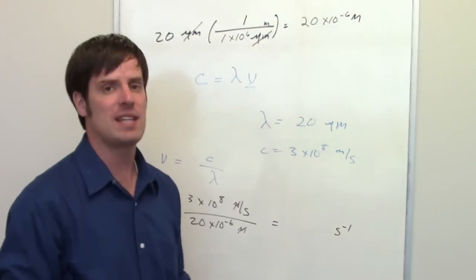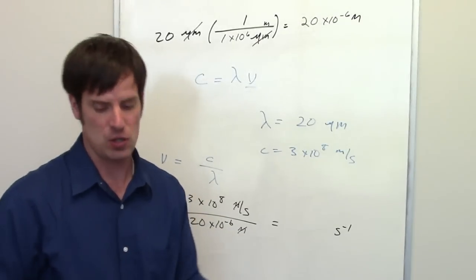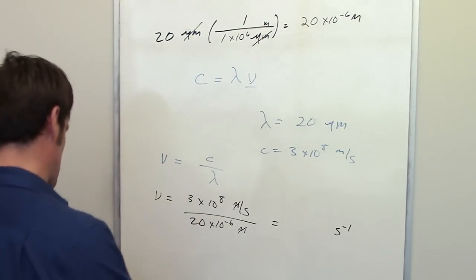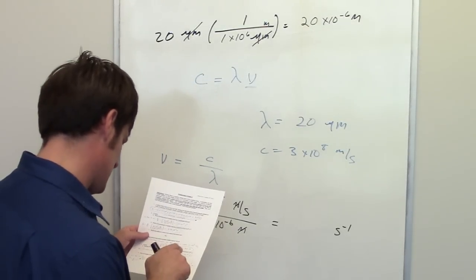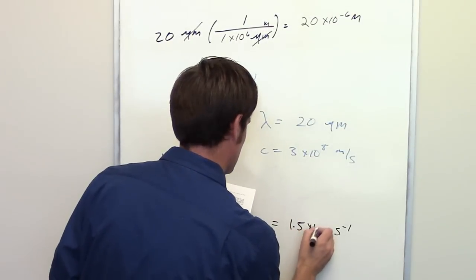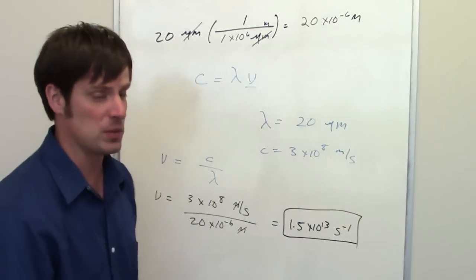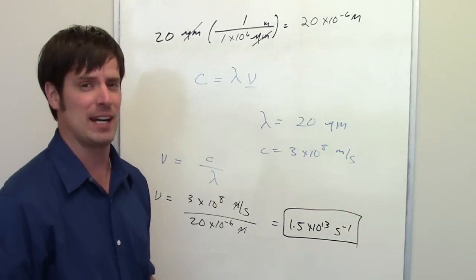The units of inverse seconds can be read as per seconds. So mathematically I've determined this to come out to be 1.5 times 10 to the 13 inverse seconds. And that is the frequency of this type of electromagnetic radiation.